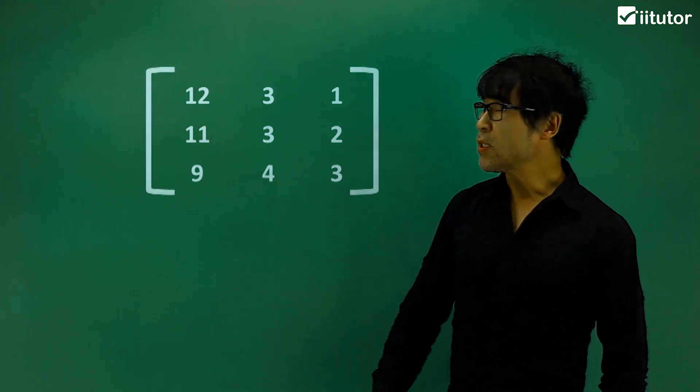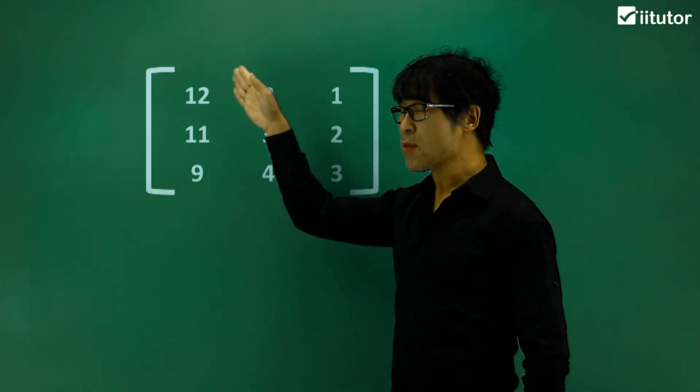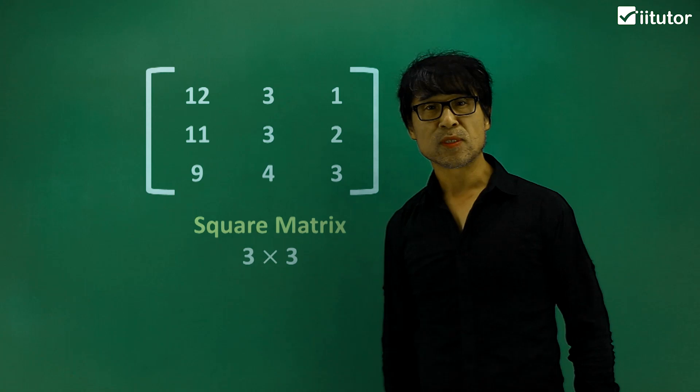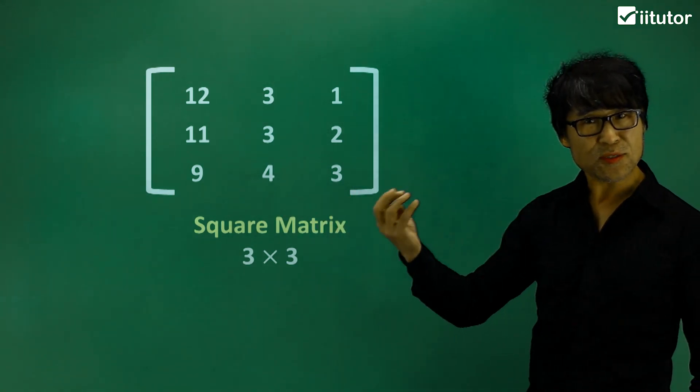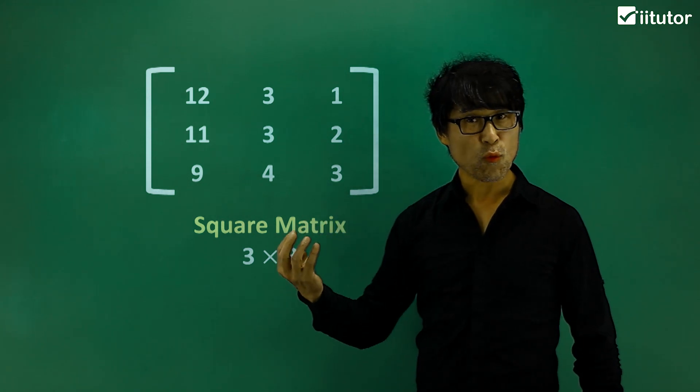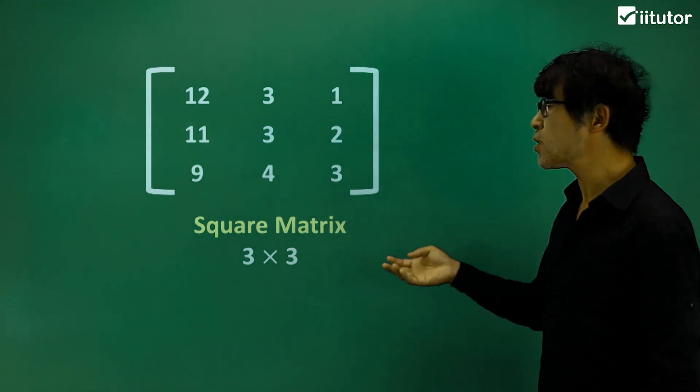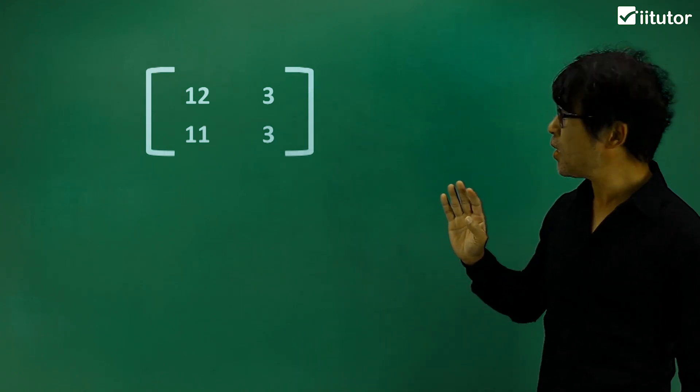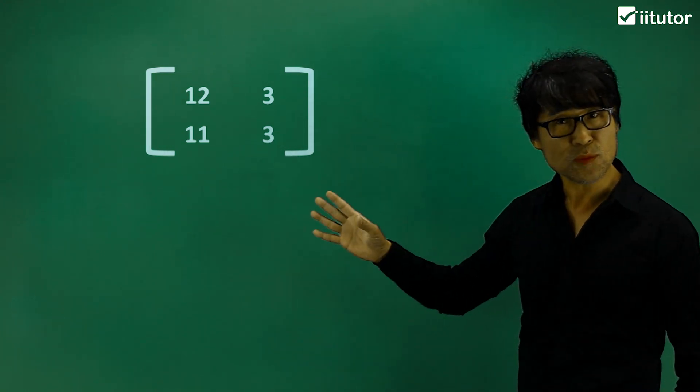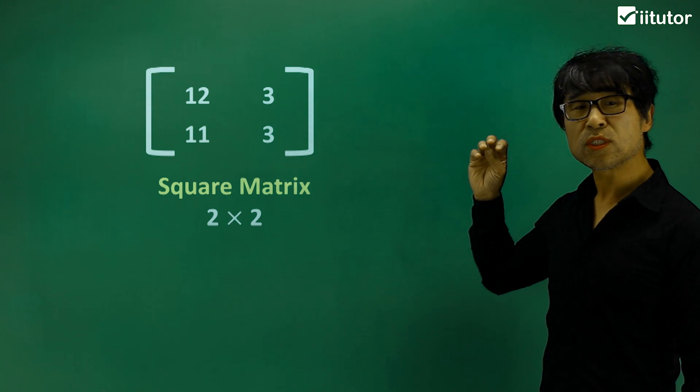Now what's happening here? We have three by three, so we call it a square matrix. Three by three, it sounds like a perfect square or square number, so we call it square matrix. What about here? Yeah, two by two—two rows and two columns, so we call it also a square matrix.